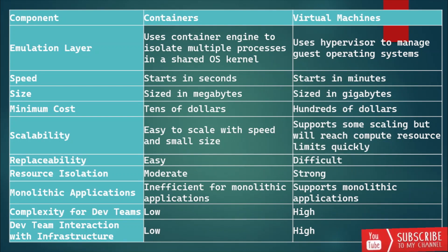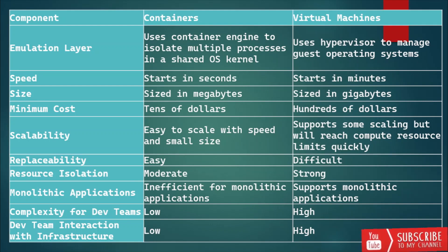If we talk about cost, container cost is way less than virtual machine cost. For scalability, it is easy to scale quickly with containers, which is not the case with virtual machines. For replaceability, it is easy to replace a particular container, but it is very difficult to replace a virtual machine. For resource isolation, virtual machines have stronger resource isolation as compared to containers. Regarding usage for monolithic applications, containers are inefficient for monolithic applications, but virtual machines support them. For development team complexity, containers have very low complexity, while virtual machines have high complexity.